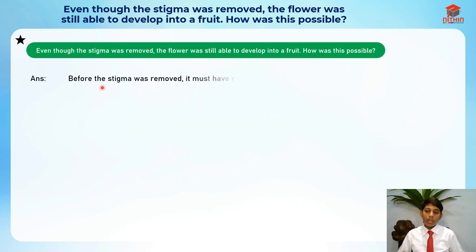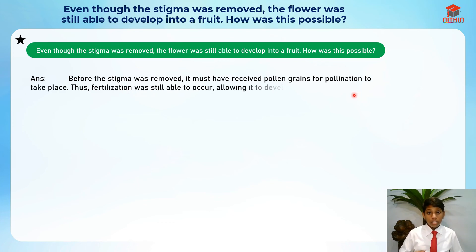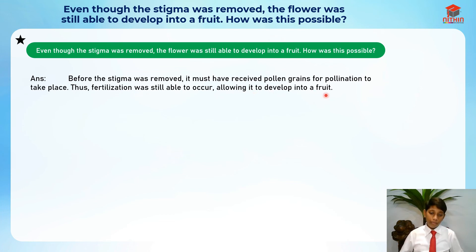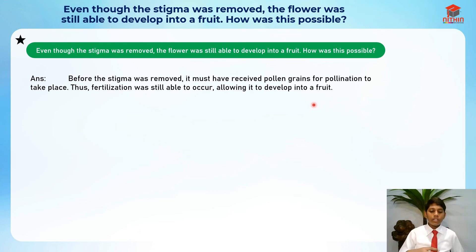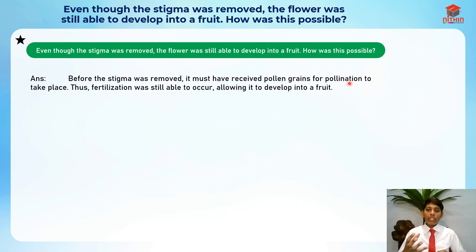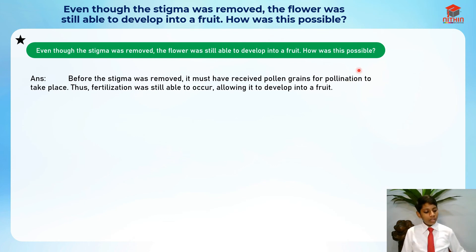Here's the answer: before the stigma was removed, it must have already received pollen grains for pollination to take place. Thus, fertilization was still able to occur, allowing it to develop into a fruit. The stigma must have already received the pollen grains so that the male reproductive cell could still fertilize with the female reproductive cell in the ovules.